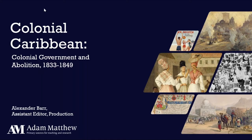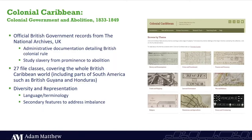As Stuart has said, this is the second module of our Colonial Caribbean series, the first of which published in September last year. This is bringing together British government records from 27 different file classes from the National Archives here in the UK, mostly from the Colonial Office series.